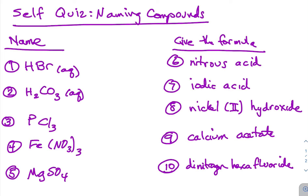Okay, hopefully you've had a chance to answer these on your own sheet of paper. So this first one, we have HBr. Remember that whenever the anion on an acid does not contain a polyatomic ion, we start the acid name with 'hydro,' then the element name, and then we end with 'ic.' So every time you have a monatomic ion — meaning just an ion straight off the periodic table — it starts with hydro and ends with 'ic.' So this is hydrobromic acid.